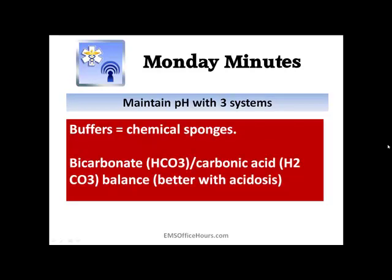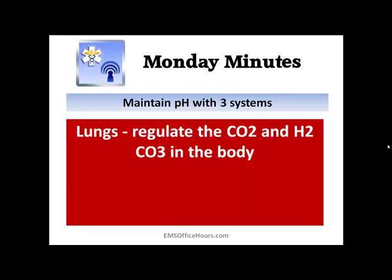First, we have our buffers — those chemical sponges — and we're talking about bicarbonate and carbonic acid. This buffer system works well, especially when dealing with acidosis. The second way is through your lungs, which regulate CO2 and H2CO3 in the body. Your lungs will either speed up or slow down your respiratory rate in order to regulate pH.